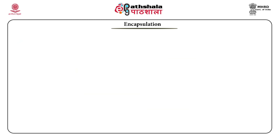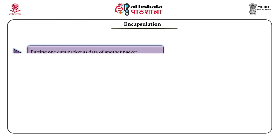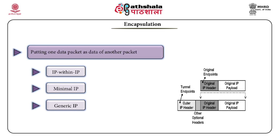Encapsulation means putting the packet header and data as the data of another packet. Decapsulation means removing the packet from the data part of the outer packet. The new header is called the outer header or tunnel header, and the original header is called the inner header. Mobile IP uses different types of encapsulation: IP within IP, which is mandatory, and two optional methods — minimal encapsulation and generic routing encapsulation.